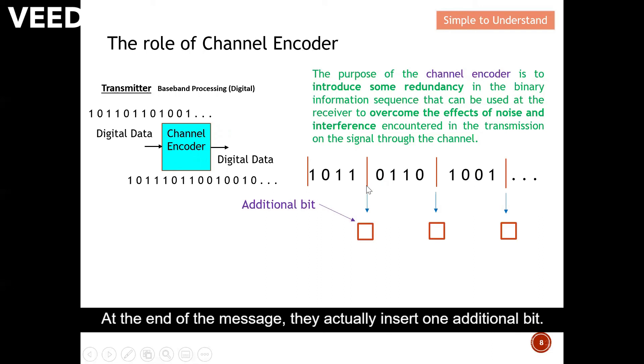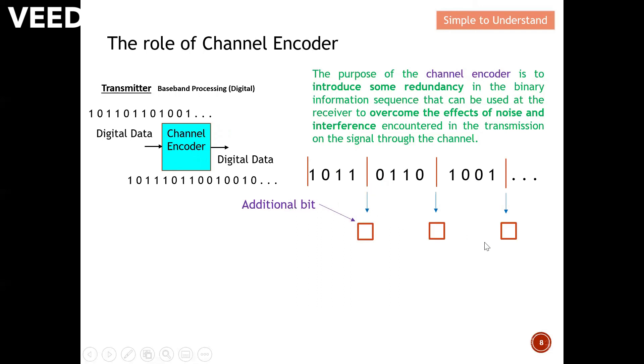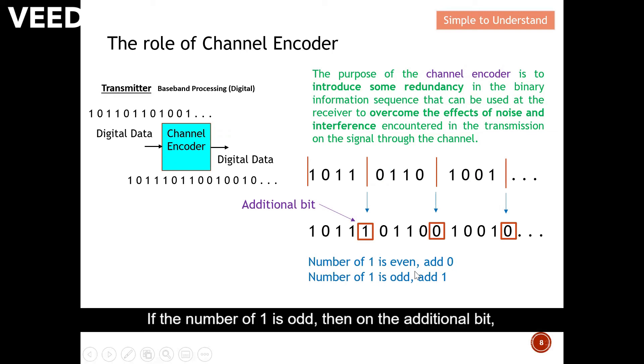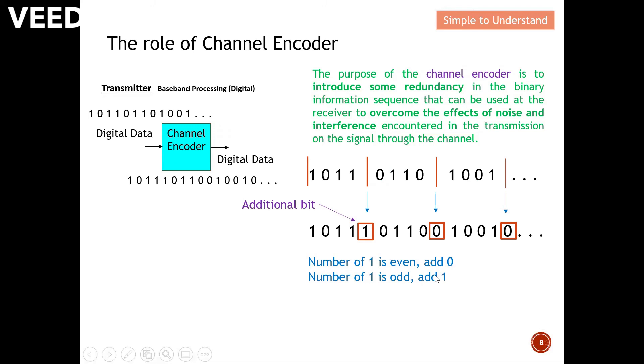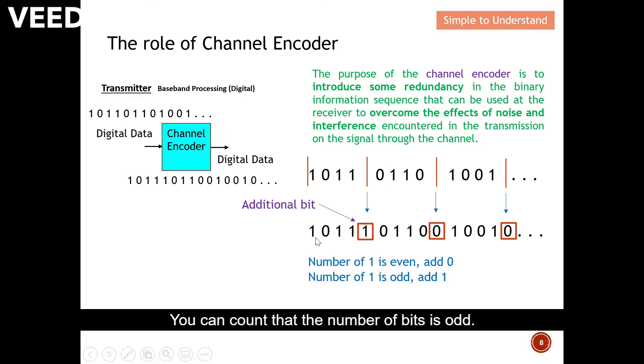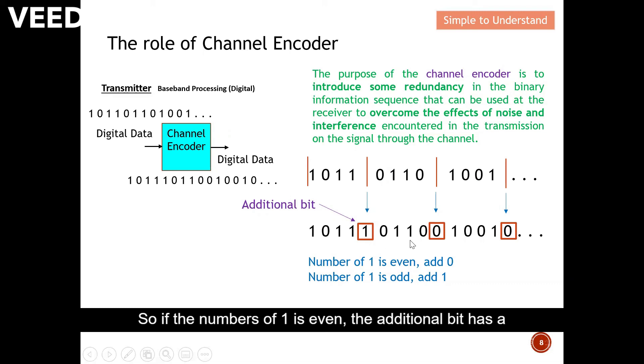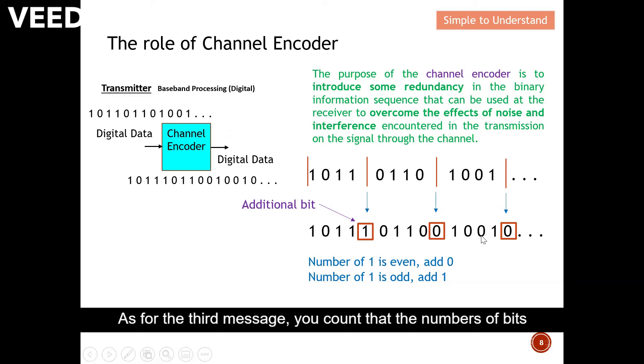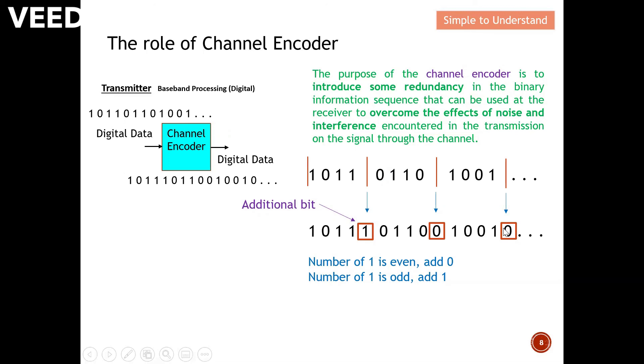At the end of the message, they actually insert one additional bit. So in this case, for example, if the number of ones is even, the additional bit, I will add a zero. If the number of ones is odd, then on the additional bit, I add a message one. Let's take a look on the first message. You can count that the number of bits is odd. Therefore, the additional bit is added as one. If the number of ones is odd, the additional bit has a zero inserted. As for the third message, you count that the number of bits is even. Again, the additional bit, we will insert a zero.